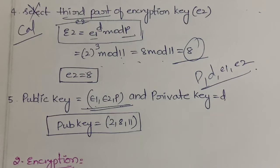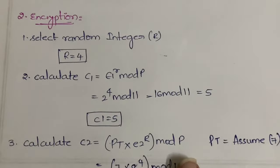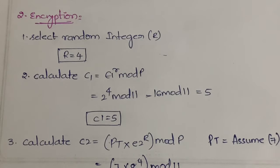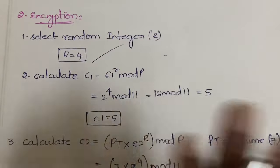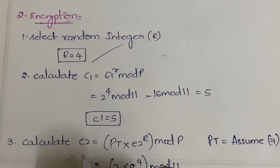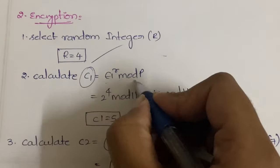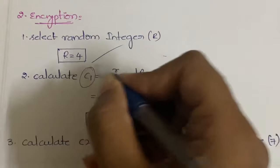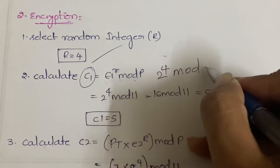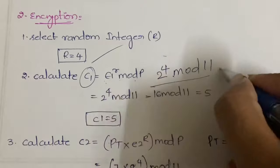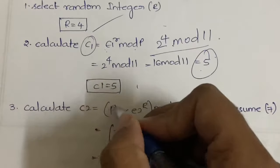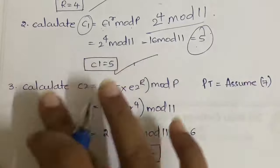In the second step we do encryption. First, select a random integer r — we have selected r = 4. Next, calculate c1 and c2, which represent the cipher text. c1 = e1^r mod p = 2^4 mod 11 = 16 mod 11 = 5. So c1 = 5.